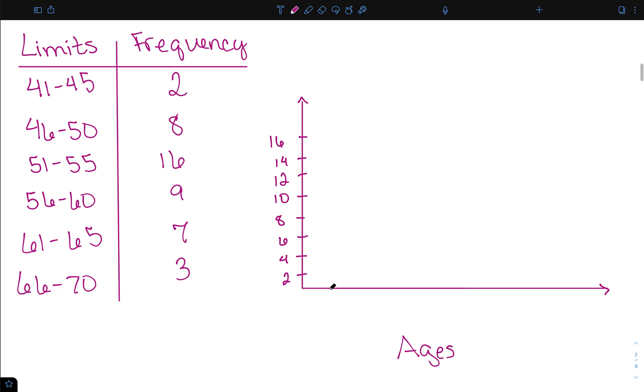Halfway between 41 and 45 would be 43. Halfway between 46 and 50 is 48. Between 51 and 55 is 53. Halfway between 56 and 60 is 58. We then have 63 and finally 68. So these are our class midpoints.